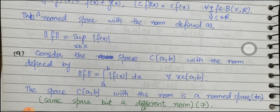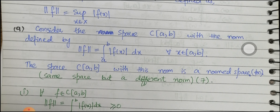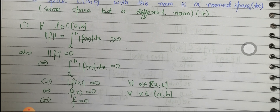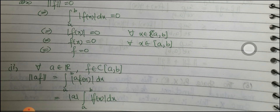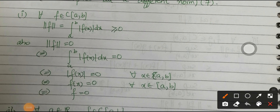Example 9: Consider the space C[a,b] with the norm defined as ‖f‖ = ∫ₐᵇ |f(x)| dx. This space with this norm defines a normed space. For condition 1, for all f ∈ C[a,b], ‖f‖ = ∫ₐᵇ |f(x)| dx ≥ 0 since |f(x)| is non-negative, so the integral of a non-negative function is non-negative. Also, since a < b, the expression is non-negative.